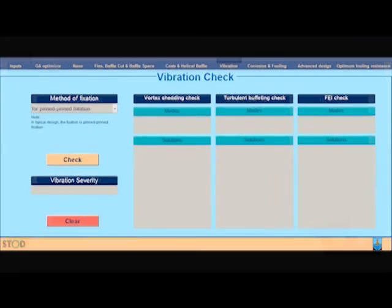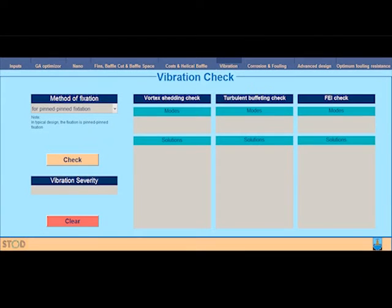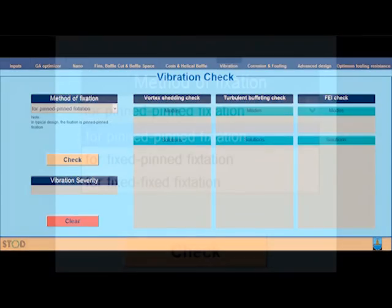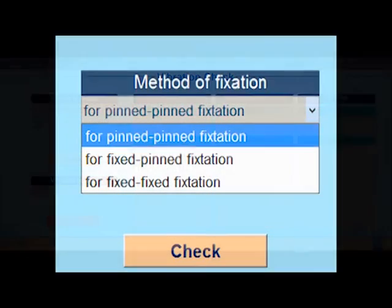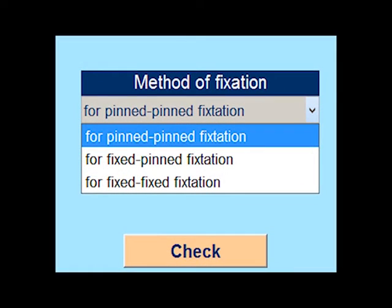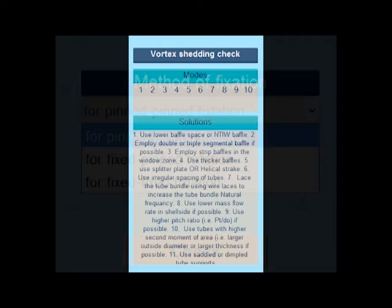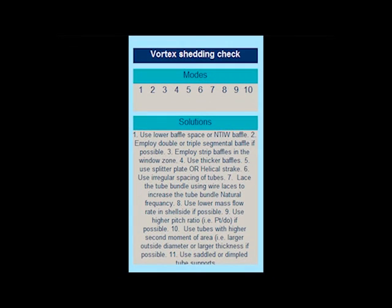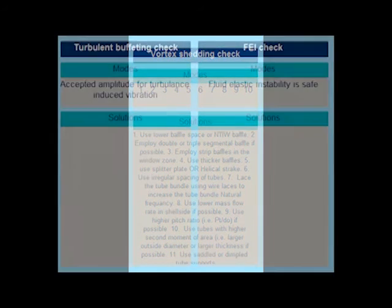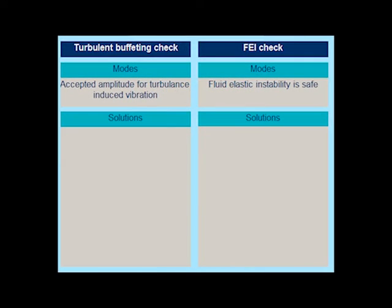In this panel, the vibration check is performed. The designer should enter the method of fixation of the tubes, which is typically pin-pin fixation. The check is made on three common failure mechanisms: vortex shedding, turbulent buffeting, and acoustic fatigue.